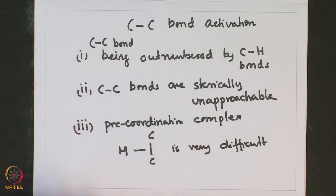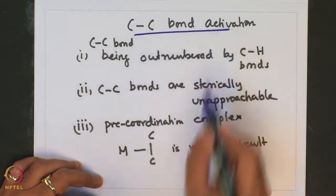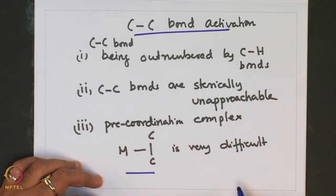This is an important point for the difficulty in achieving C-C bond activation. From our knowledge of C-H bond activation, we have found that C-H bond activation is always initiated by initial coordination of a C-H bond to the metal center, and that is a prerequisite for the occurrence of C-H bond activation. In the case of C-C bond activation, analogous precoordination of the C-C bond to the metal becomes very challenging because of the steric unapproachability around a C-C bond, leading to difficulty in achieving C-C bond activation.